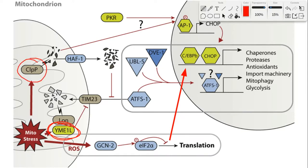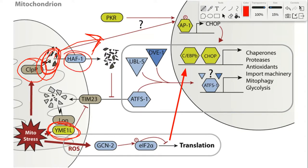The other really important protease is CLPX. At least in worms, CLPX appears to have an affinity for misfolded proteins, and it's also required for the MT-UPR in worms. Current models suggest that CLPX is capable of chopping up misfolded proteins, and then some of these cleaved peptides are actually ejected from the mitochondria through a transporter called HALF1.